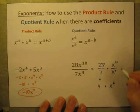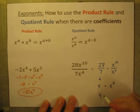take those exponents and subtract them, 10 minus 4 is 6. So all of this simplifies down to 4x to the 6th power.